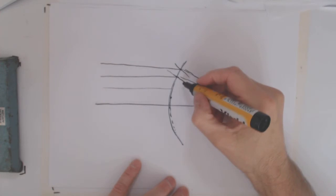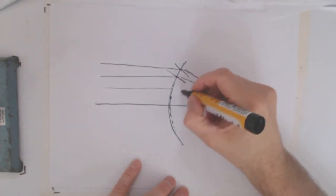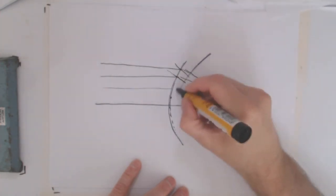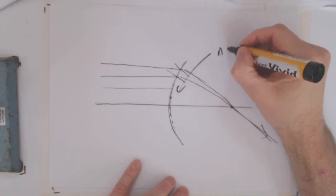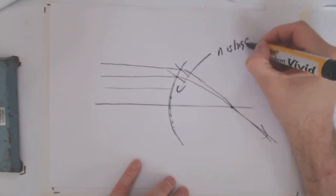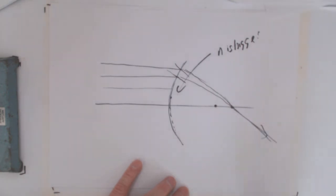So what if the refractive index here, n of the glass, is bigger? If n is bigger, then we're going to get this focal point move back here. What's that going to do to the image size?